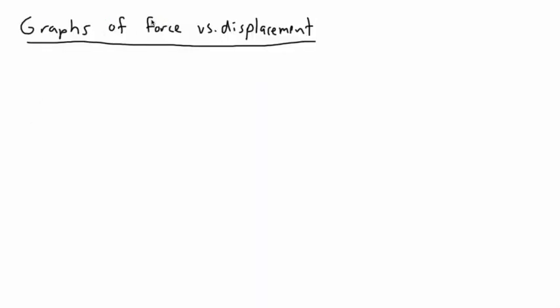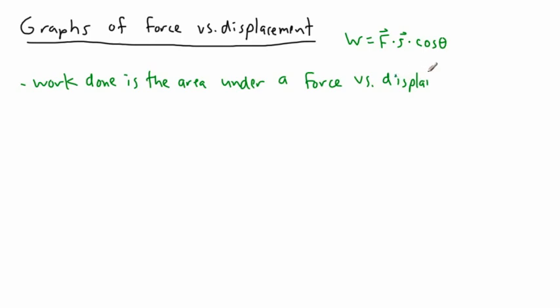A practical example here is we can look at graphs of force versus displacement. What I'm going to do is write down the equation for work. Work is the force times the displacement times the cosine of the angle between them. Work done is the area under a force versus displacement graph.